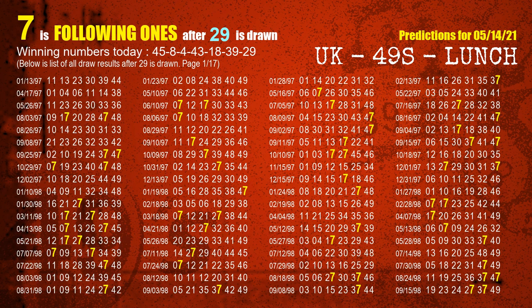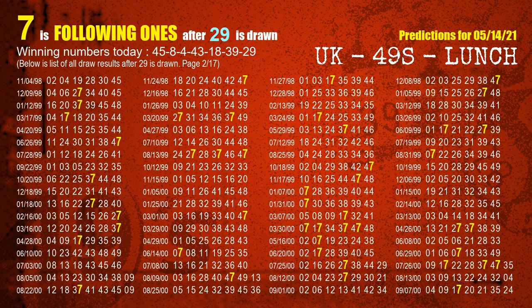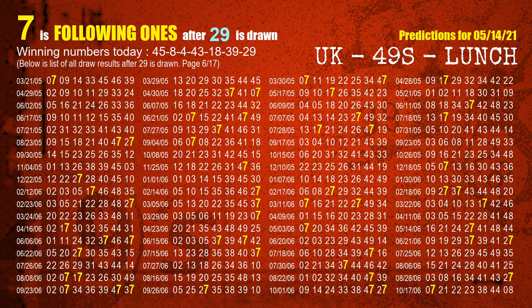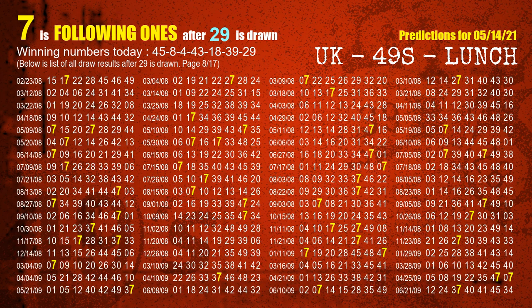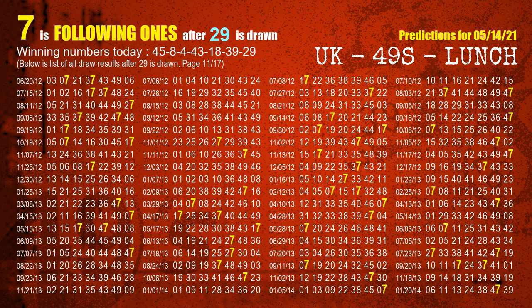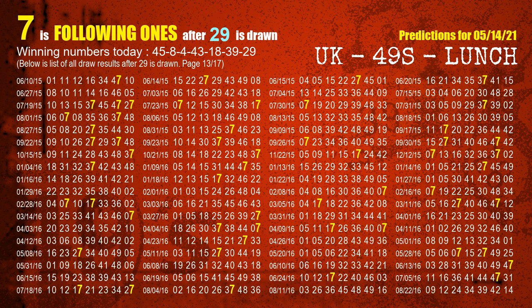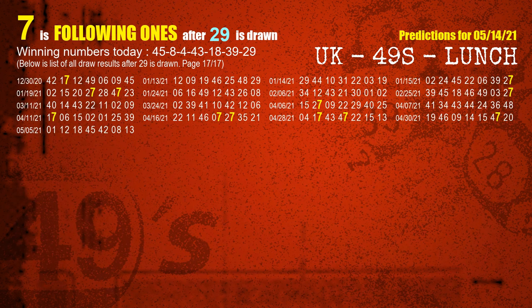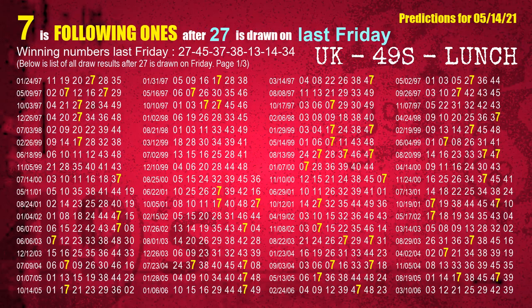The booster winning number is 29. The most frequently following units digit is 7 when 29 is the winning number in last draw. After calculating following ones with today's result, we will now find out following ones through the result of the same day last week.